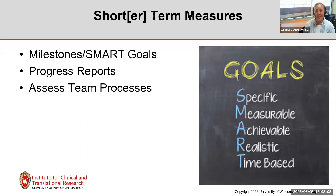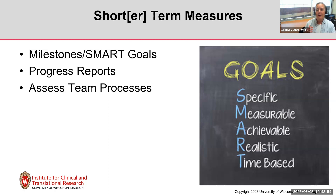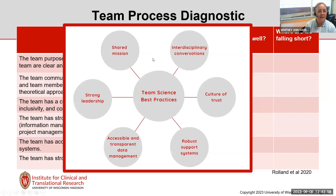Think about some of those specific aims you might have in NIH grants and the milestones — NIH grants are often evaluated on a yearly basis with the RPPR, and sometimes you might have quarterly milestones. Creating goals in this SMART way can help you meet those milestones, help with your progress reports, and also help you assess team processes — not just research impact on task work, but also how your team is working well together.